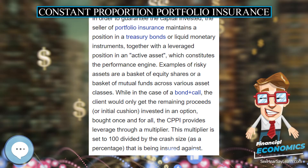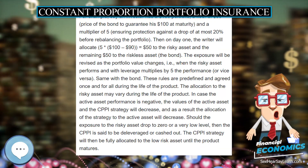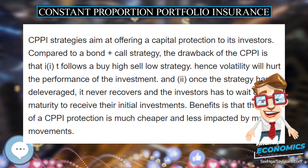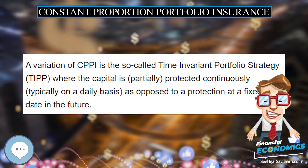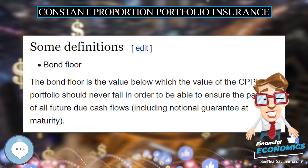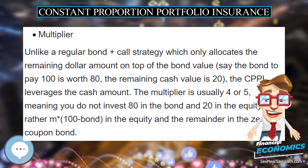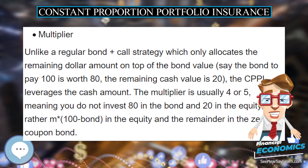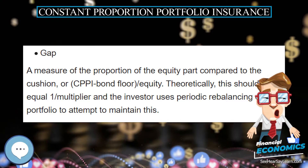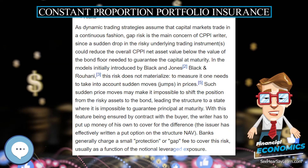CPPI strategies aim at offering capital protection to investors. Compared to a bond plus call strategy, the drawbacks of CPPI are: (1) it follows a buy-high, sell-low strategy, hence volatility will hurt the performance of the investment; and (2) once the strategy has deleveraged, it never recovers and the investor has to wait until maturity to receive their initial investment. The benefit is that the price of CPPI protection is much cheaper and less impacted by market movements.